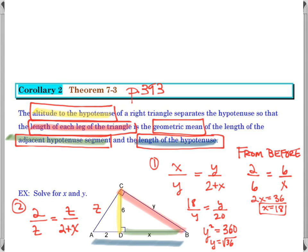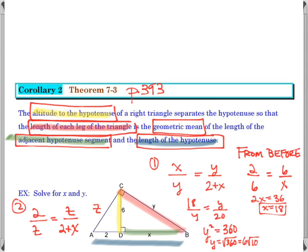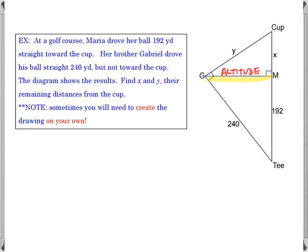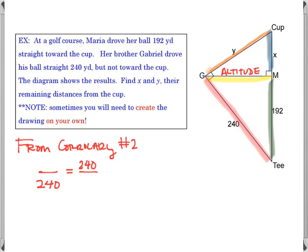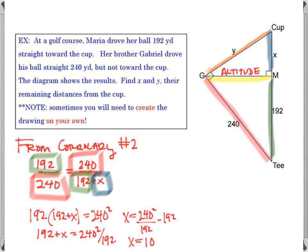Y is 6 root 10, and then we plug in X to solve for Z and go from there. This takes a long time to read and understand, but every time we're trying to get down to some proportion. The last example is a word problem we'll do in class: we set up the altitude proportion where 240 is our adjacent side, and the whole hypotenuse is 192 plus X. We cross multiply and solve for X from there — it's just the math part of working through it.